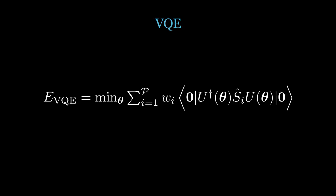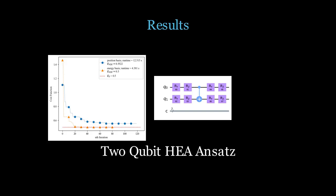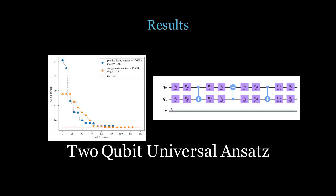The results show that the VQE pipeline successfully minimized the energy, except for the position-based Hamiltonian and the 4 qubit ANSATZ, which struggled to converge.